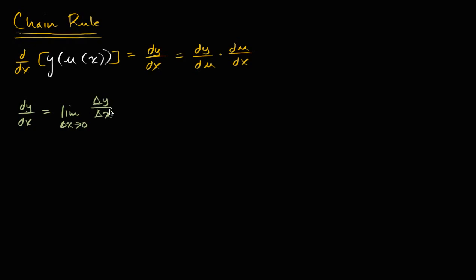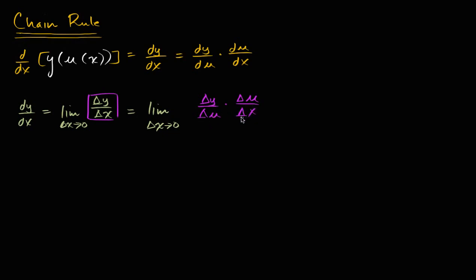Now we can do a little bit of algebraic manipulation here to introduce a change in u. This is going to be the same thing as the limit as delta x approaches zero — and I'm going to rewrite this part right over here. I'm going to essentially divide and multiply by a change in u. So I can rewrite this as delta y over delta u times delta u over delta x. Change in y over change in u times change in u over change in x. These are just going to be numbers here, so the change in u cancels and you'd be left with change in y over change in x, which is exactly what we had. So nothing earth shattering just yet.